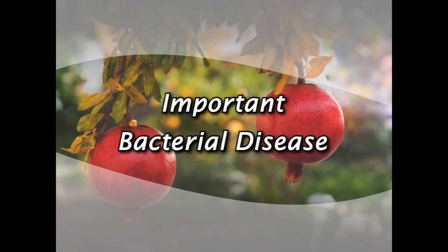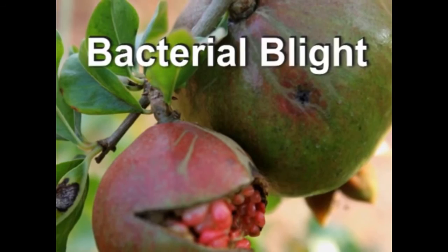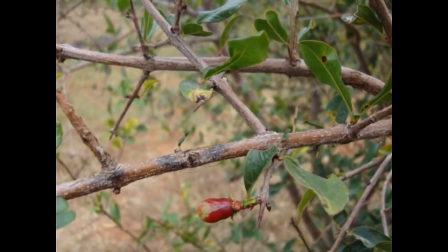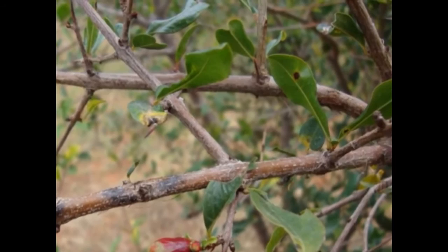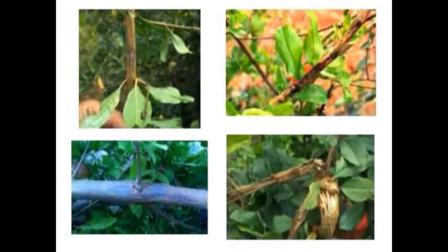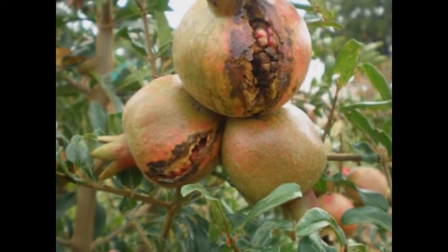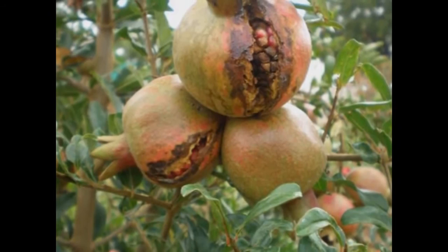Important bacterial disease of pomegranate: Bacterial blight, caused by Xanthomonas axonopodis pv. punicae. Symptoms include appearance of small water-soaked, dark colored, irregular spots on the leaves, resulting in premature defoliation under severe cases. The pathogen also infects stem and branches causing girdling and cracking symptoms. Spots on fruits are dark brown, irregular, slightly raised with oily appearance, which split open with L-shaped cracks under severe cases.